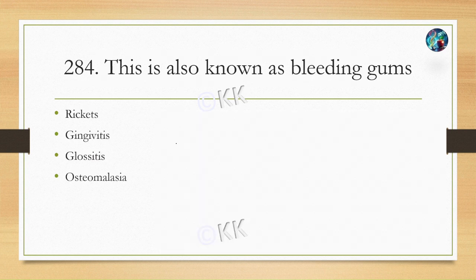The next question asks: this condition is also known as bleeding gum. Option A Rickets, option B Gingivitis, option C Glutitis, option D Osteomalacia. The correct answer is option B, Gingivitis. Gingivitis presents with red, swollen gums and bleeding symptoms.